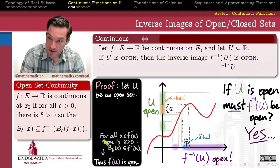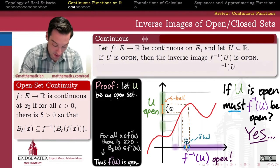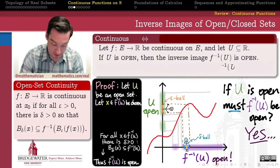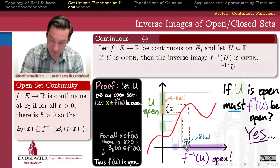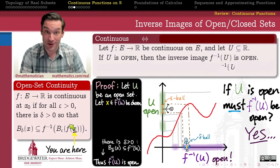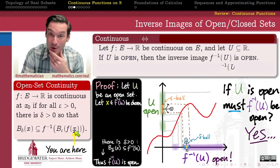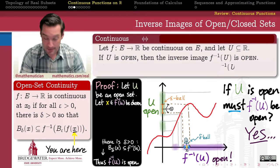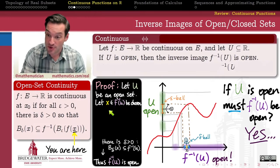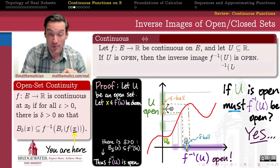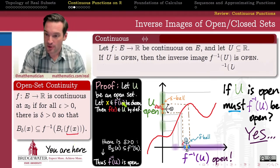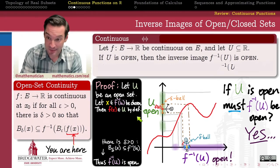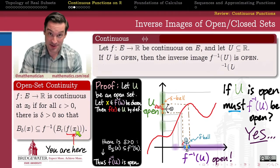Since I need to show this for all x in the inverse image of U, I'll pick an arbitrary x in that set. Now what do we know about x? x is a point in the inverse image of U. The inverse image of a set consists of all points whose images belong to that set. So the inverse image of U consists of all points in the domain such that f of those points is a member of U. Just by definition of inverse image, x belonging to the inverse image of U means that f of x belongs to U. We've now taken one step further out and know something about f of x — namely, f of x is an element of U.